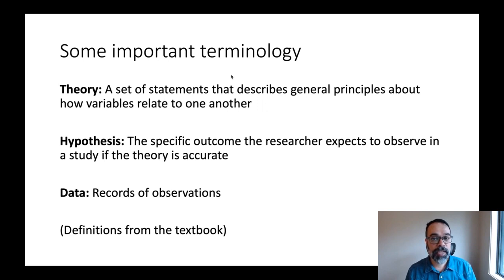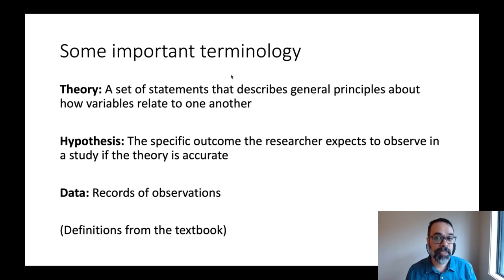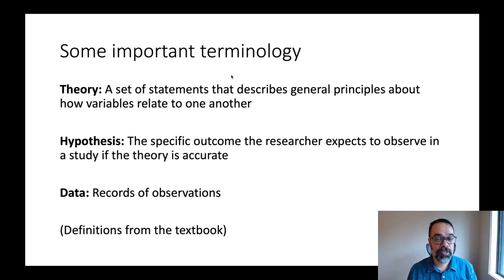These are definitions from the textbook. Notice that in everyday language we sometimes use these words a little differently — sometimes we say something is 'just a theory.' But in science, a theory is as good as it gets. A theory is a set of statements about how nature works; it could be right or wrong, but there's nothing better or worse than a theory.